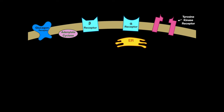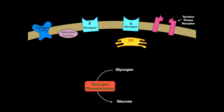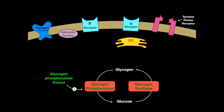In the muscles and liver, glycogen exists as a storage form of glucose. Glycogen phosphorylase turns glycogen into glucose. After a meal, glycogen synthase, as the name suggests, synthesizes glycogen from glucose. Glycogen phosphorylase is activated when it gets phosphorylated, which is done by glycogen phosphorylase kinase. When glucose is needed, the hormones epinephrine and glucagon activate glycogen phosphorylase kinase and ultimately glycogen phosphorylase, which releases glucose.